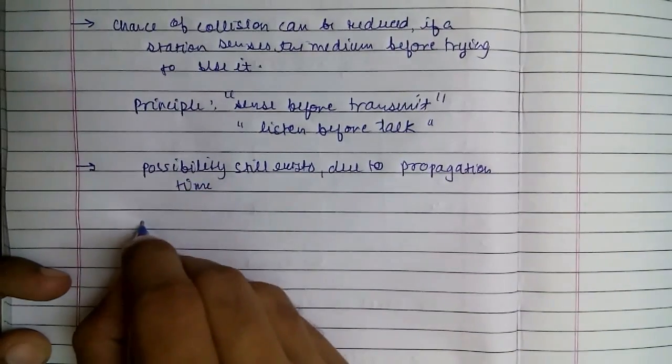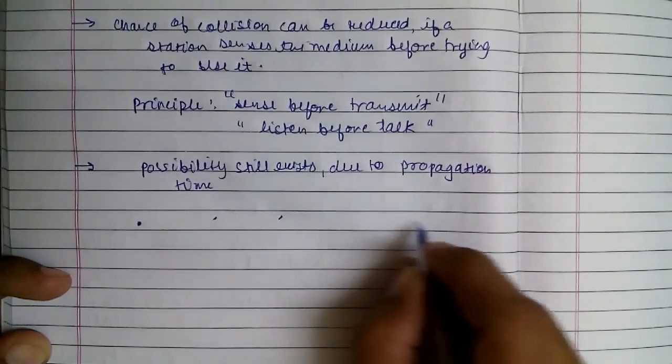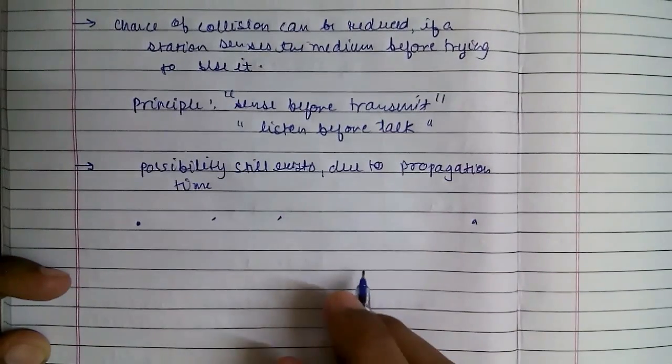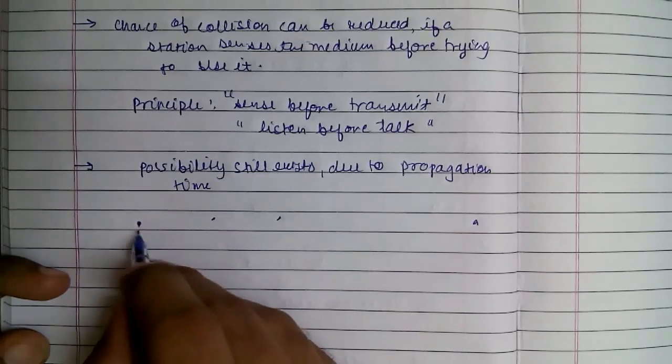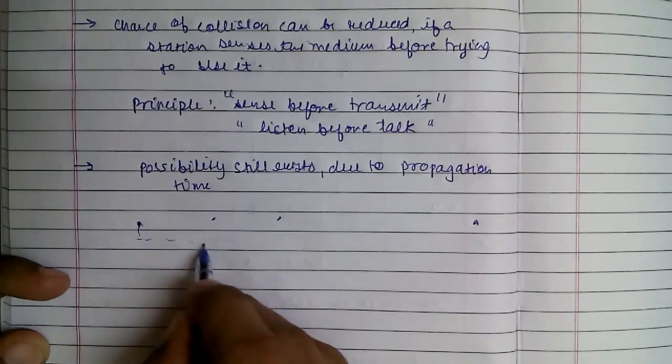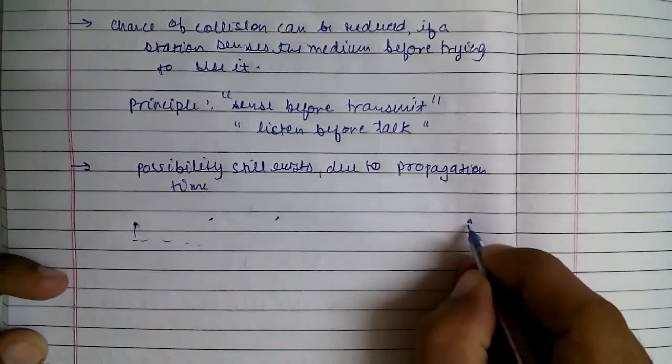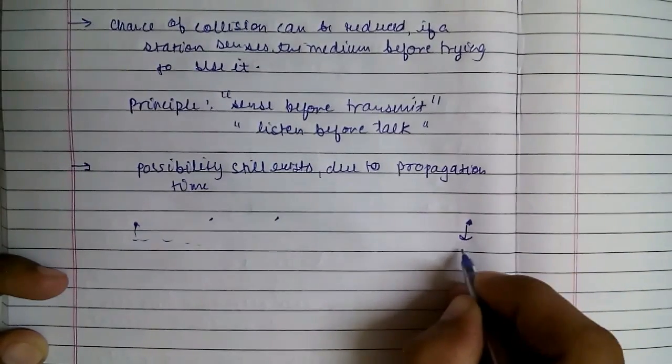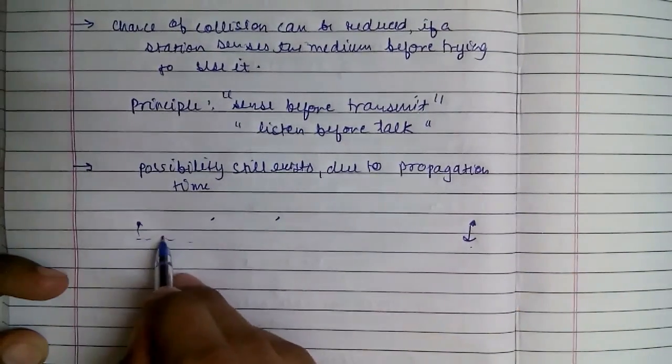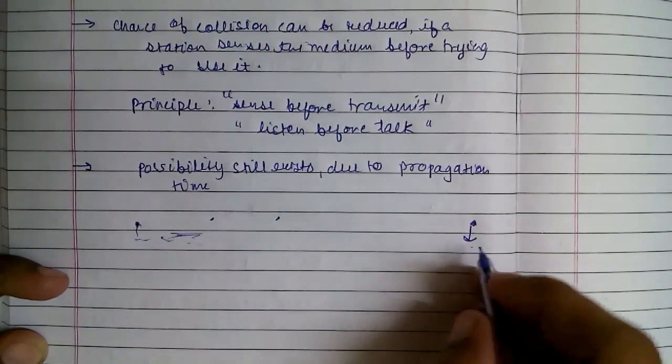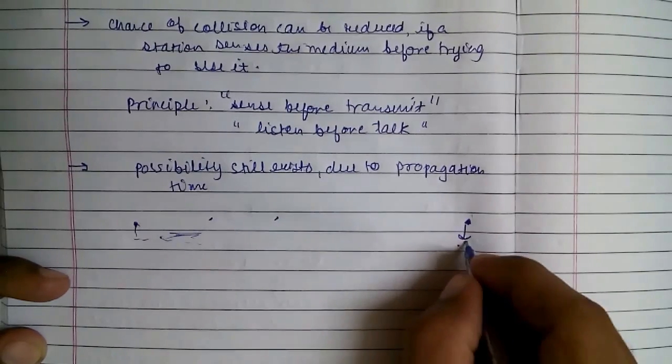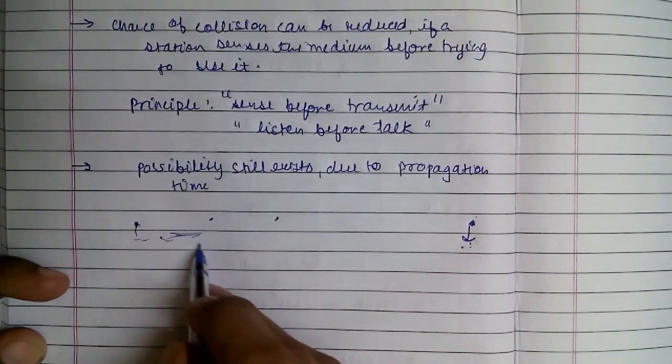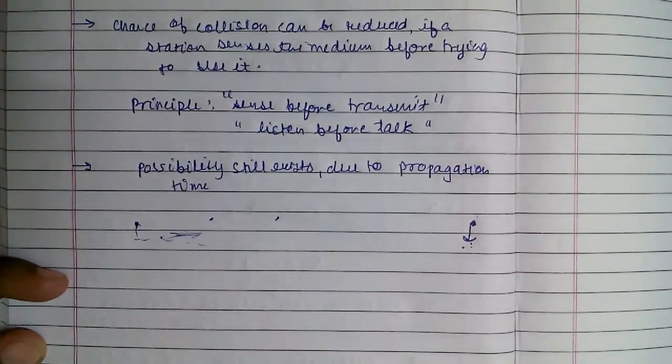Let's say there is a station, then another, then another, and there is one far away station. This station is sending information and this station senses the medium to be idle because this information has not reached here yet. It will sense idle, but when it is sending and this arrives, there will be a collision.